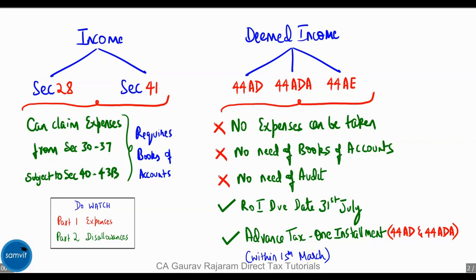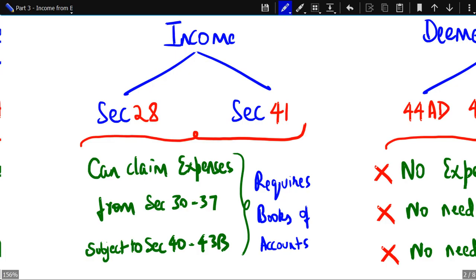Incomes are under two sections: Section 28 and Section 41. You can claim expenses from Section 30 to 37, subject to disallowances under Section 40 to 43B. But remember, it may require maintenance of books of accounts.